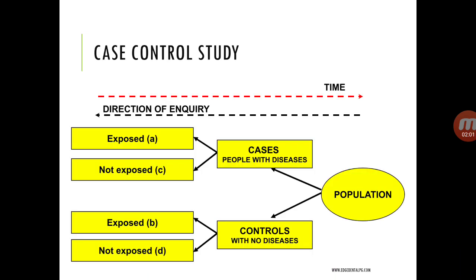Moving on to the case control study: this is a retrospective study — that is, it travels back in time, moving from effect to cause. Here, the population is divided as cases and controls, and then the study progresses to find the exposed and unexposed. This study design encounters the maximum amount of bias.